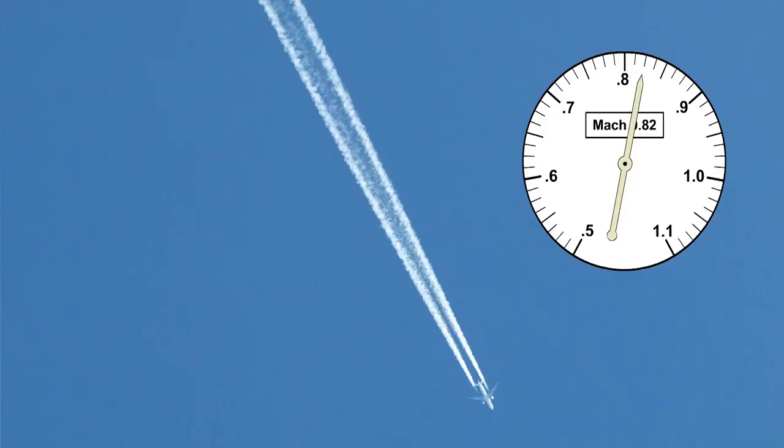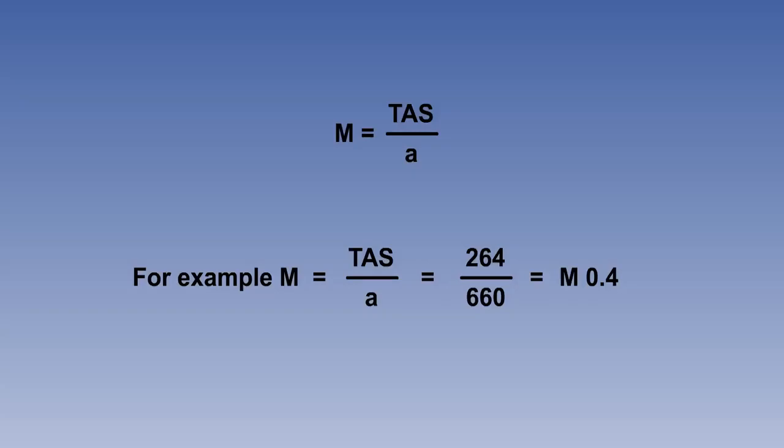At high true air speeds and or high altitudes, it is essential for the pilot to know his speed relative to the local speed of sound. This relationship is called the Mach number, symbolized by a capital M. The formula for Mach number is TAS divided by A, the local speed of sound.